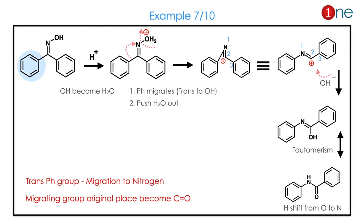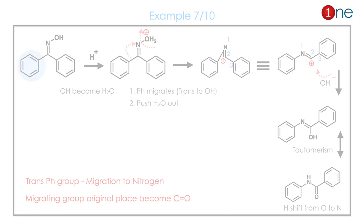In the next example, you have an oxime with phenyl groups attached on both sides. The same mechanism applies: H+ attacks, the trans phenyl group migrates, OH minus attacks, and the final product is an amide. The key fact here is that even a phenyl group can migrate to form the amide.